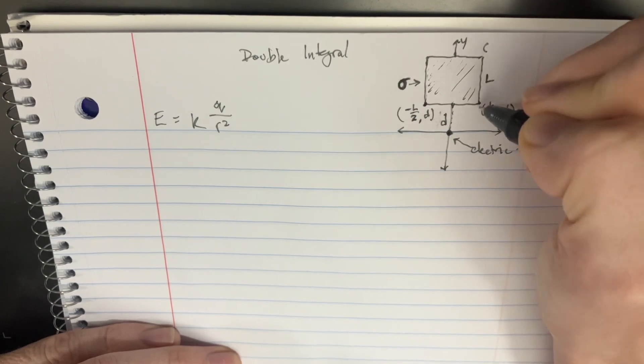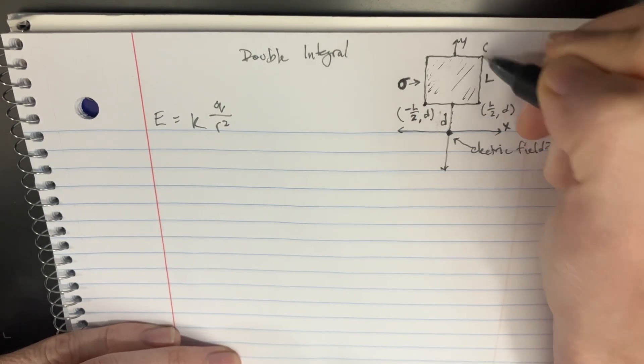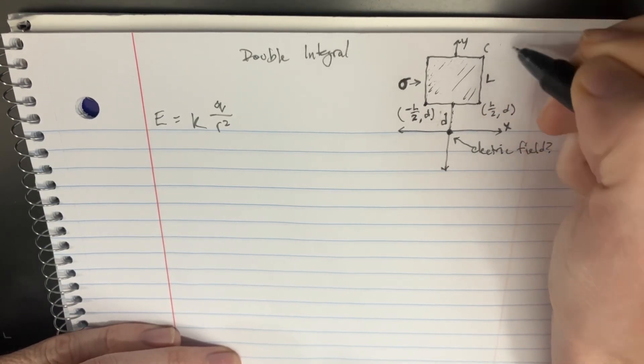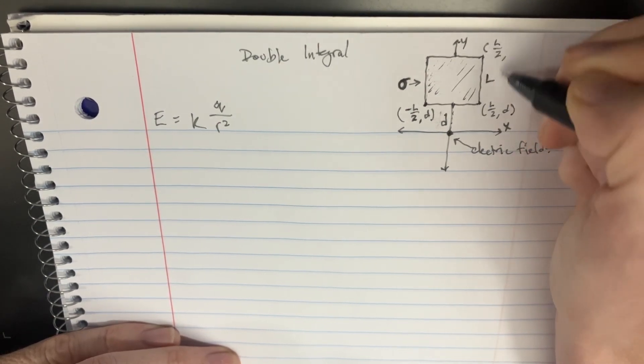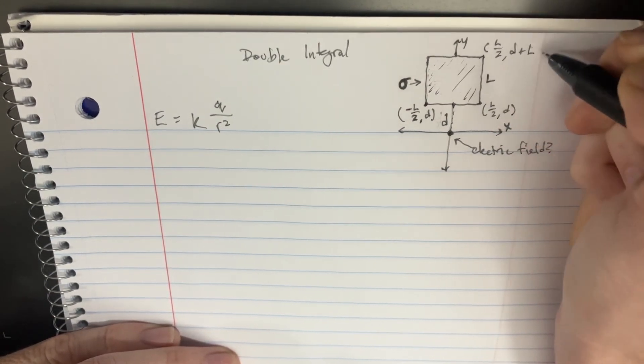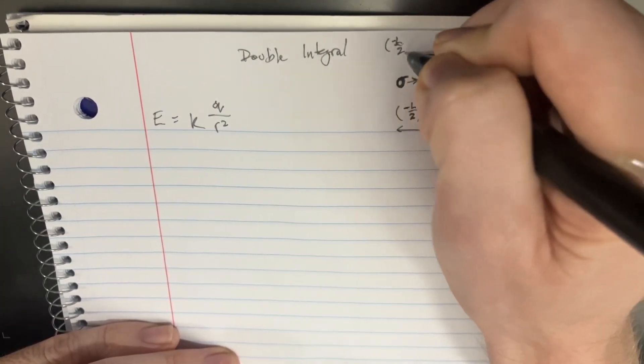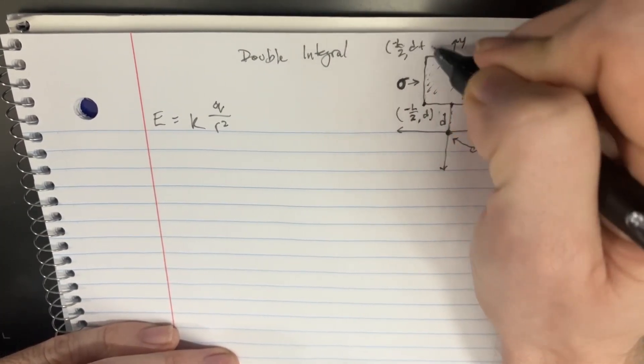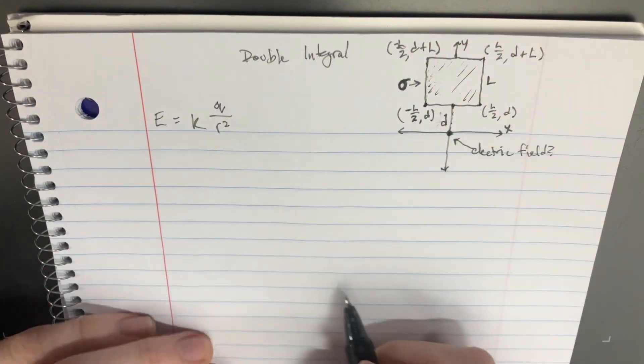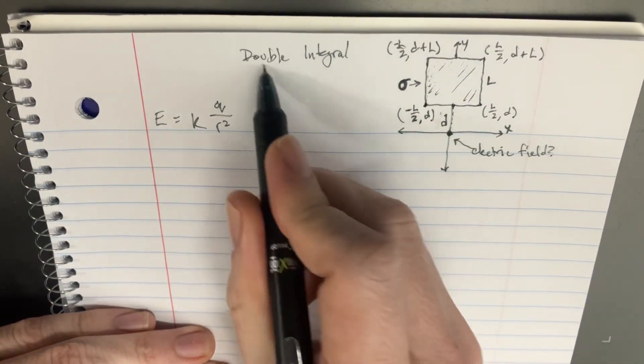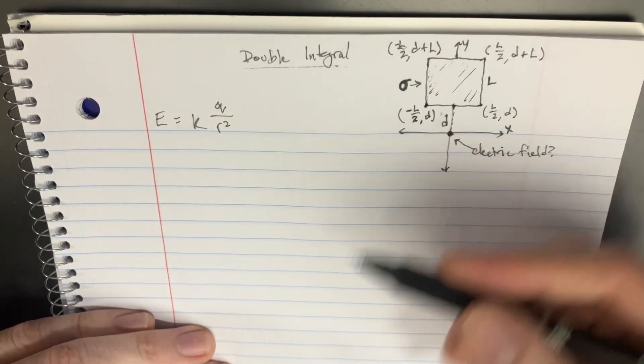But then over here, we're going to want to stop at getting L over 2. But now it's D plus Y, not plus Y, but plus L. D plus L. And over here, again, negative L over 2, and then D plus L. So now we've got everything set up here. We know the two limits of our integrations.